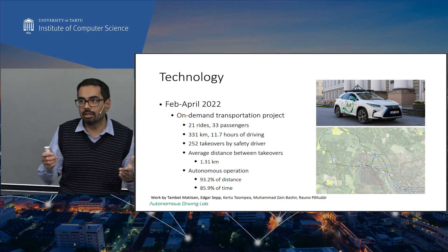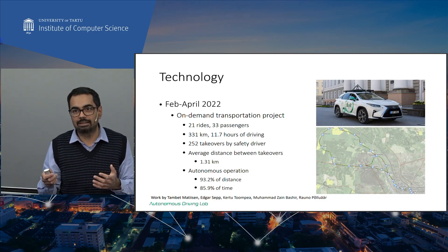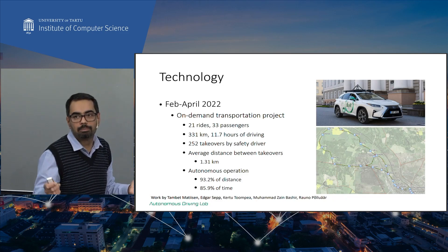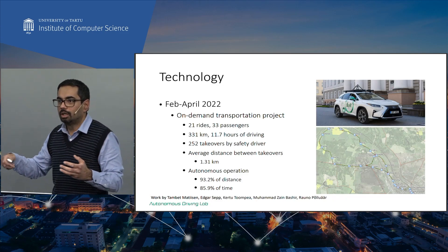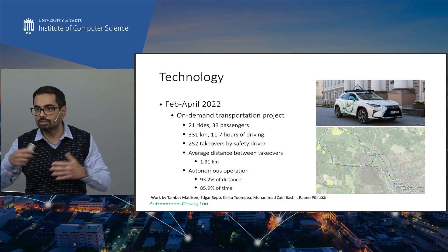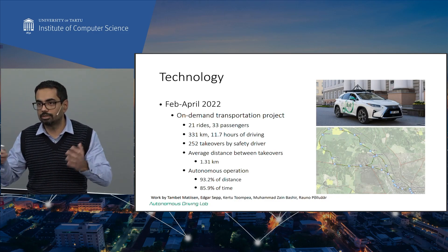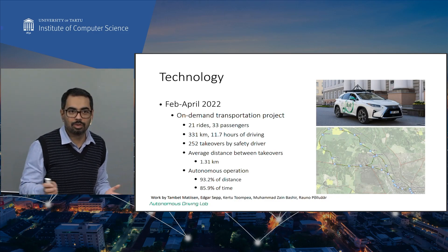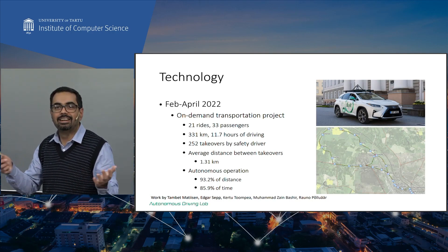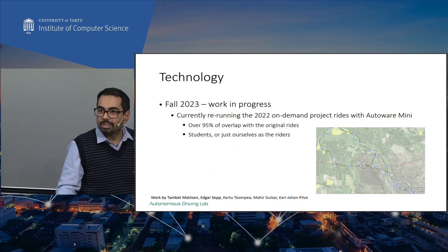In terms of metrics, 93% of the distance was driven autonomously and around 85-86% of the time the vehicle was running autonomously. We observed the same challenge: the people aspect restricts autonomy significantly — crosswalks where you give way to pedestrians, T-junctions and intersections where you give way to other vehicles. This demonstrates the challenges that remain in autonomous driving today.